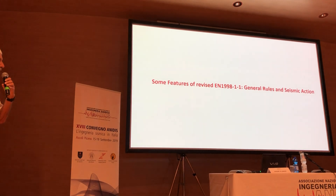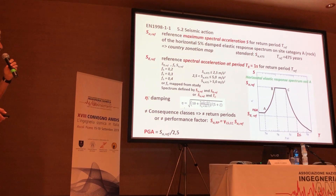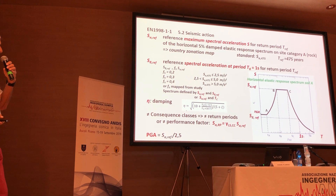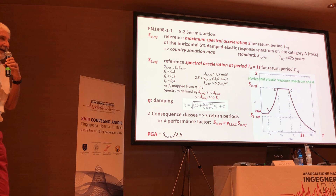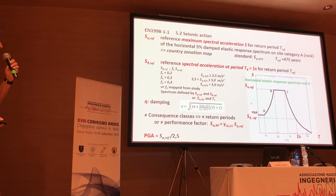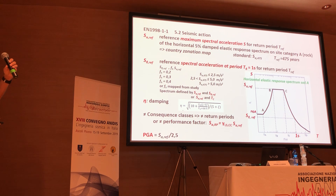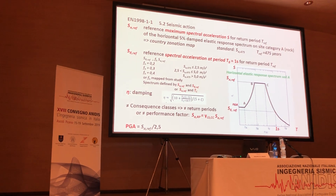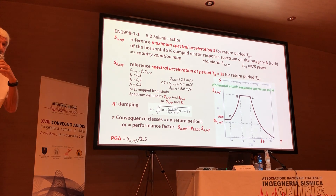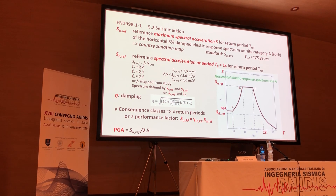One key feature of the general part on seismic action is that in the revised Eurocode, the parameter to characterize the earthquake is no longer the PGA but the maximum spectral acceleration, defined as S_alpha_F on the graph. There is also a second point defined as S_beta_F at one-second period, which is close to the definition in the American code.